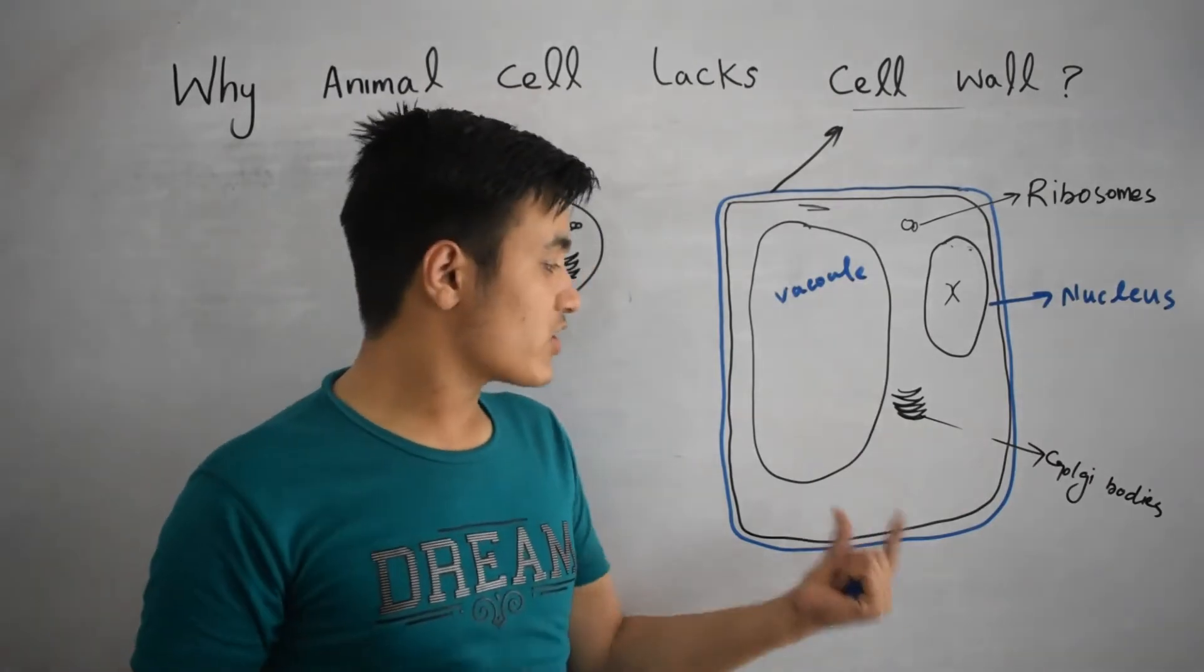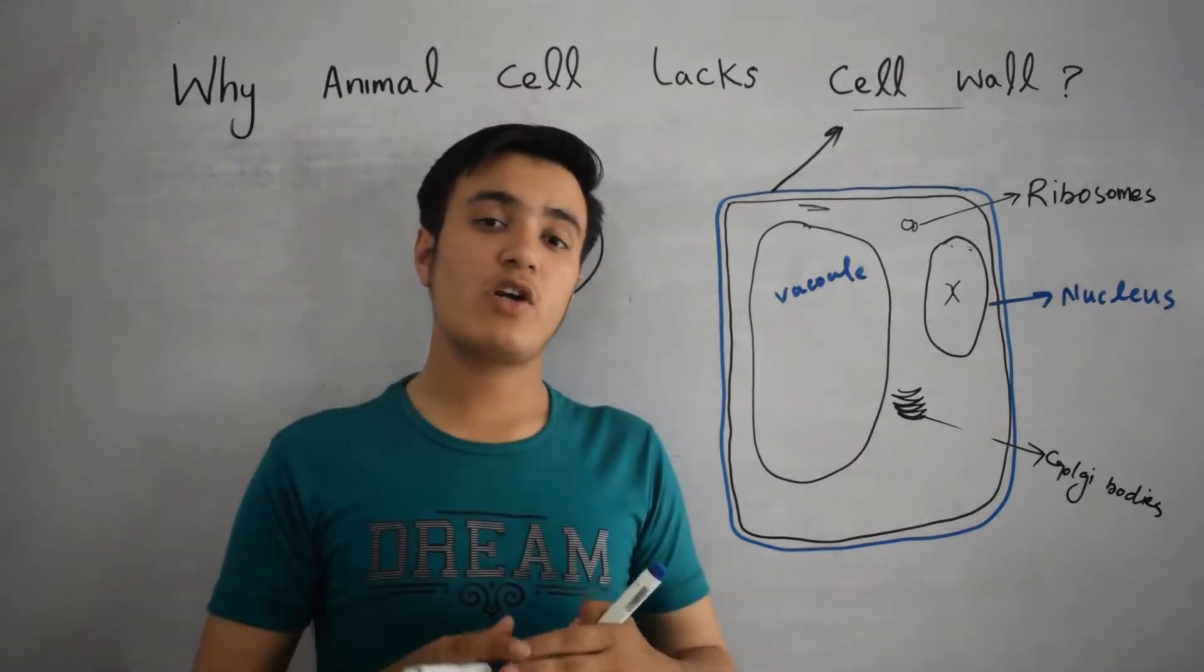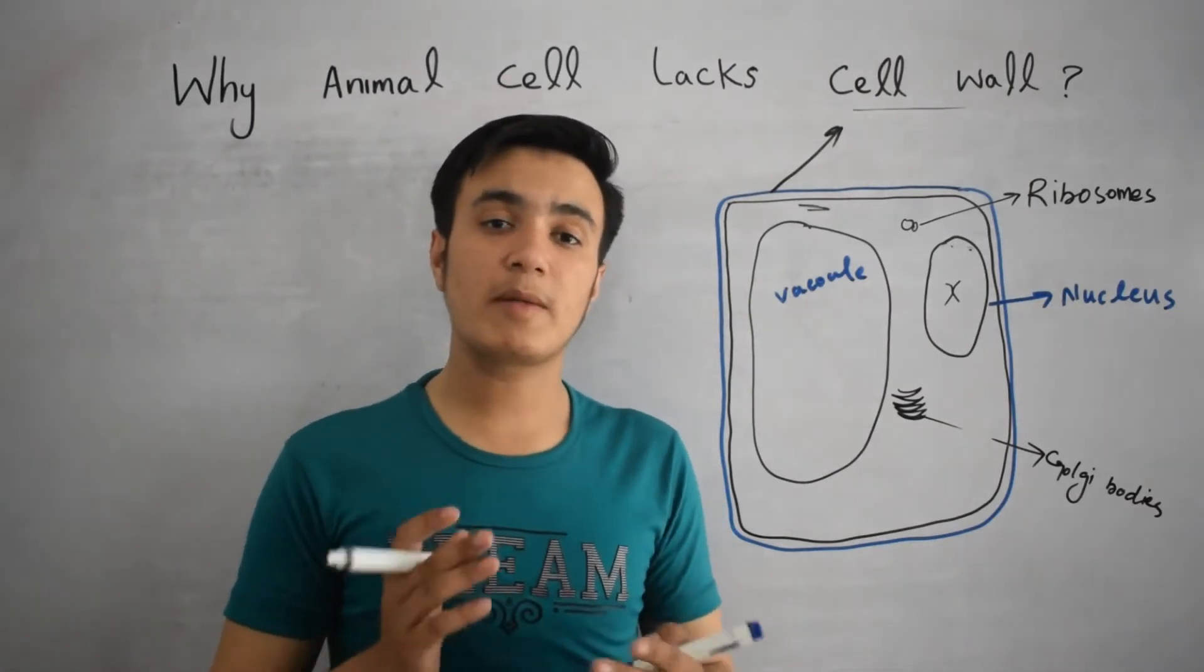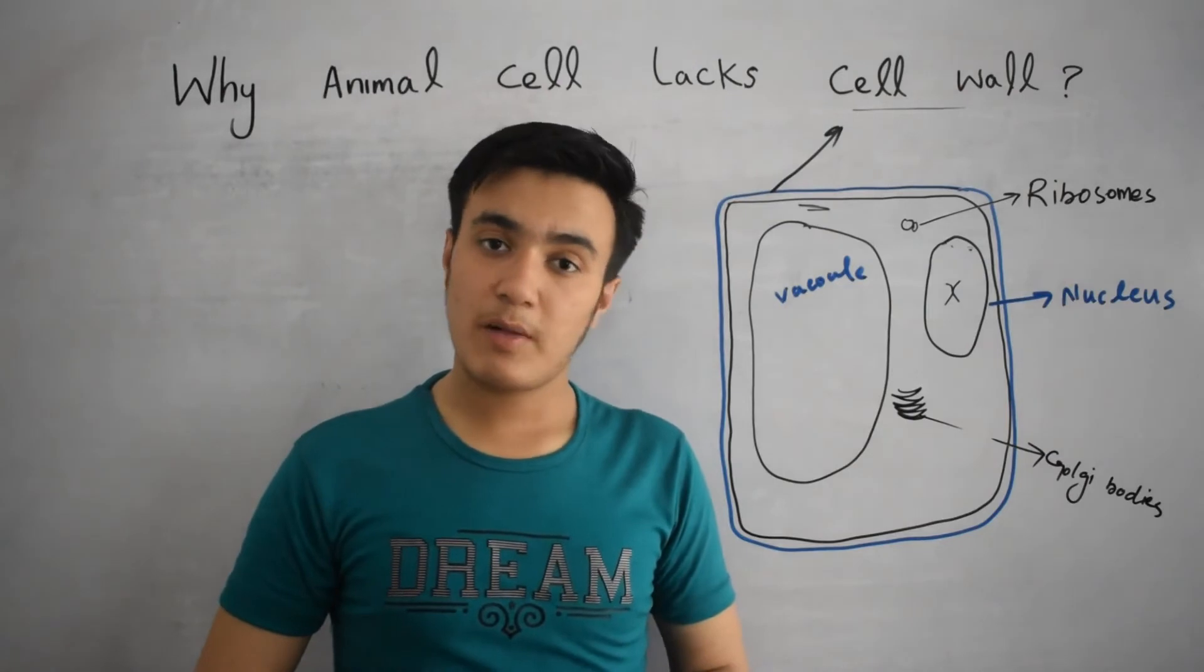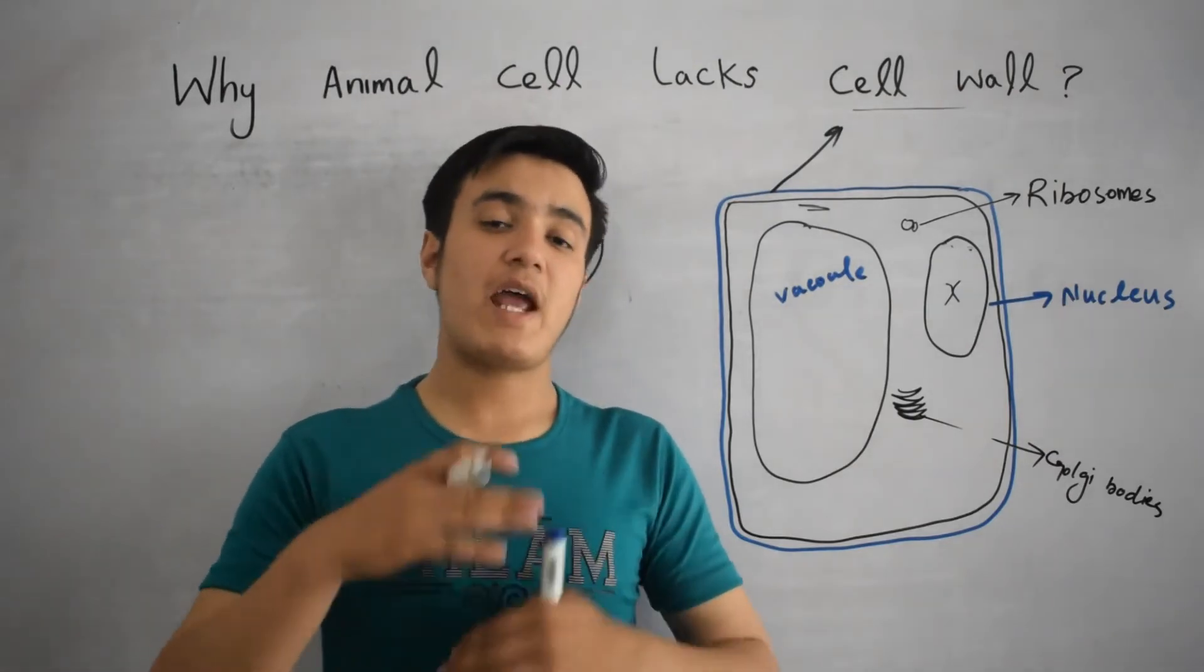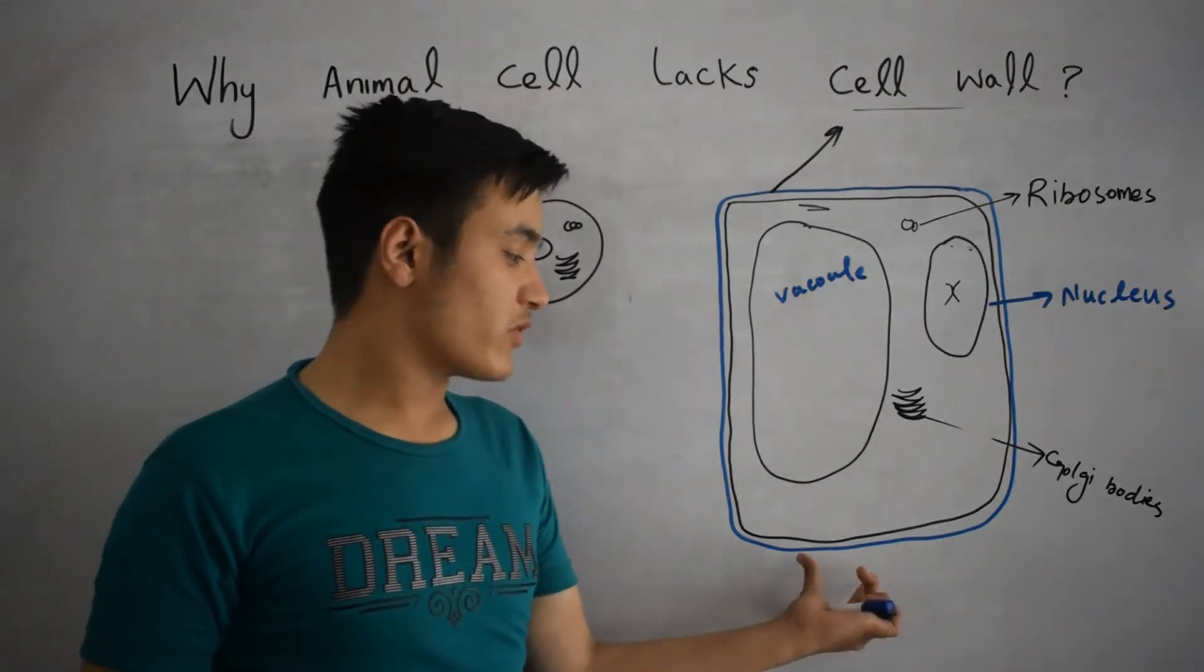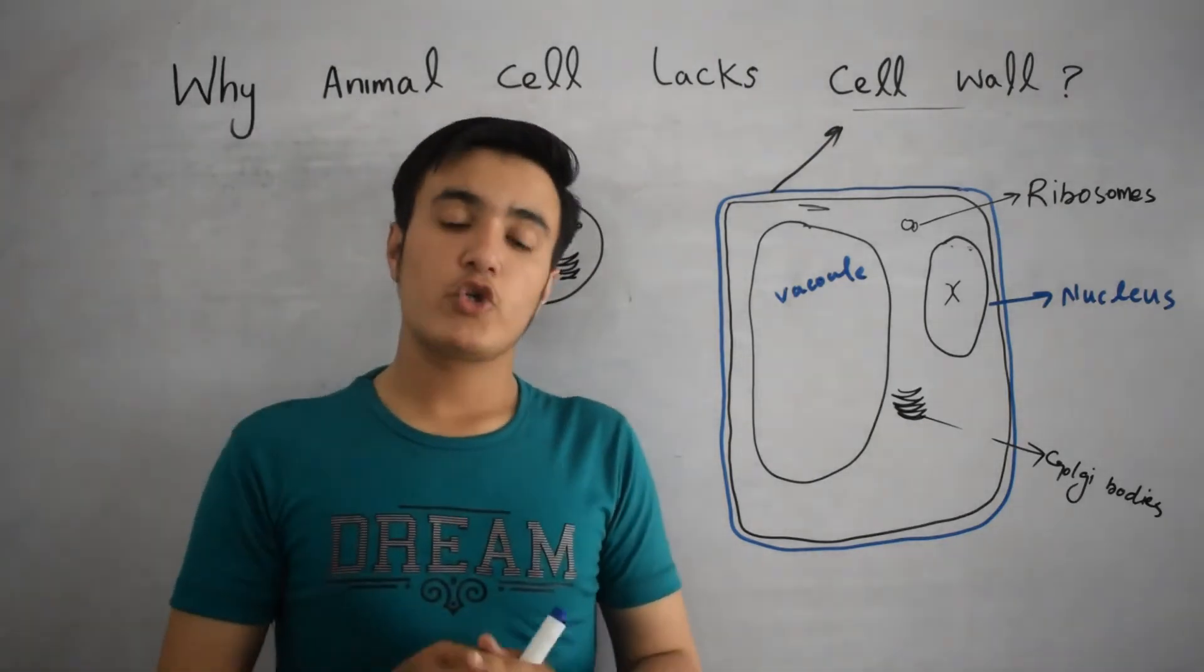But the size of the plant body, the shape of the plant body, the structure of the plant body, the length of the plant body is not up to some limit. It can extend from its limit. That's why the cell wall is present in plant cell to give support.